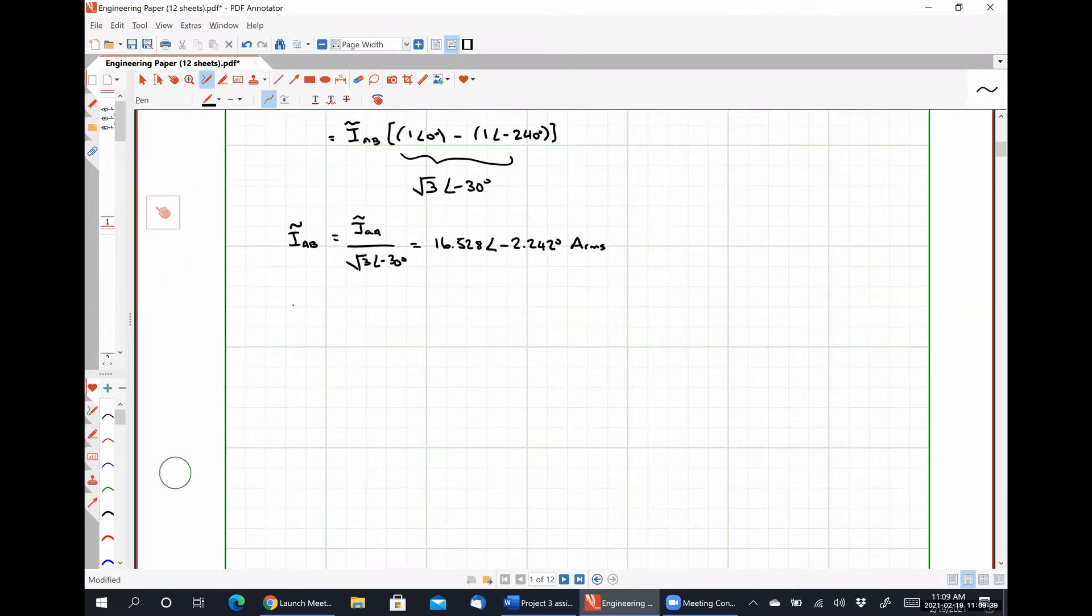So from that, our phase current IAB is simply IAA divided by root 3 angle negative 30 degrees. And I get 16.528 angle negative 2.242 degrees. And then subsequently IBC is just that shifted by 120. So 16.528 angle negative 122.242 degrees. And finally, ICA is 16.528 angle negative 242.242 degrees RMS.